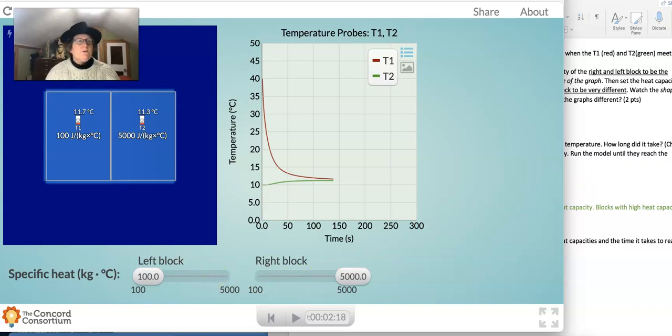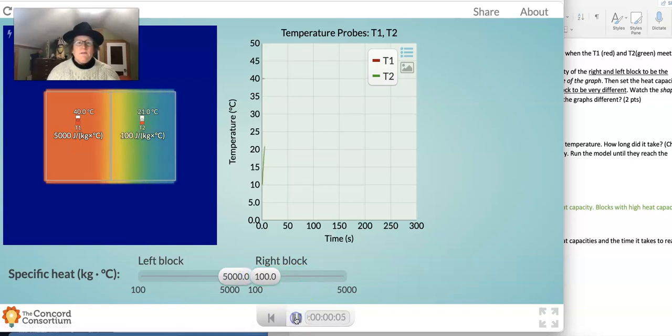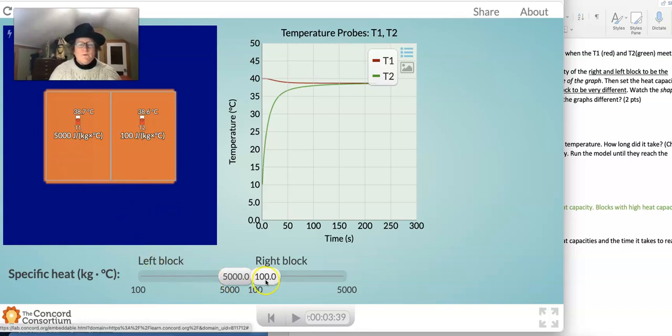That will happen also if we run it the other way around, where we make this one high heat capacity, this one low. You'll see the same sort of pattern. It's just now the block on the right, T2, has the lower heat capacity and the red line. Its temperature is going down this time, but it's still very even. Its temperature is not going up and down very quickly. It's still a very even steady temperature if it has a high heat capacity over here on the left side. Heat capacity here is 5,000 versus 100.